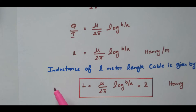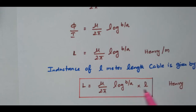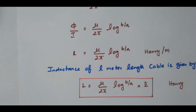If you want to find the inductance for the entire cable length l, then L equals μ divided by 2π times log(b/a) multiplied by l. In this case the unit is Henry. So in this video we discussed the definition of inductance and derivation of inductance of a coaxial or underground cable having two conductors. Thank you.